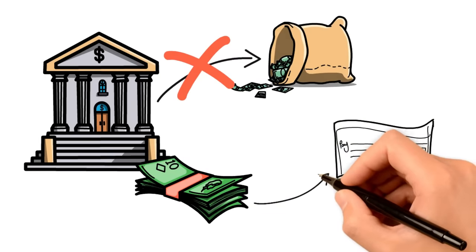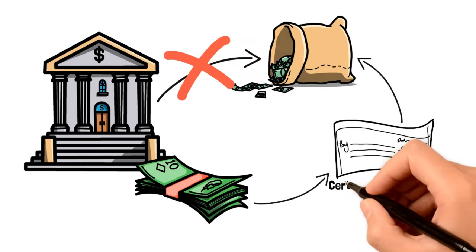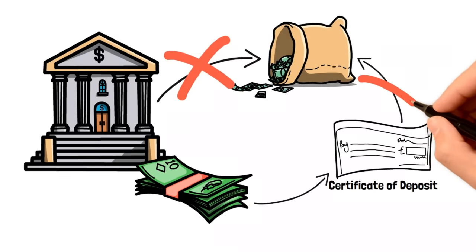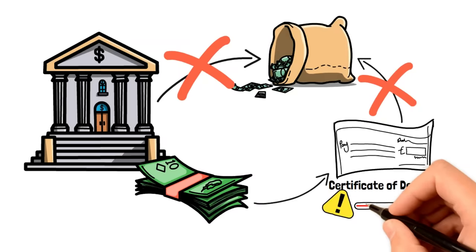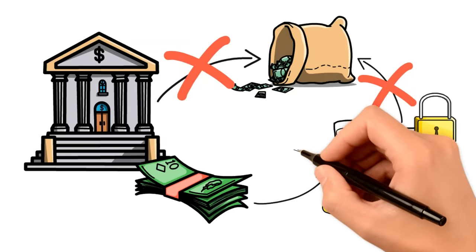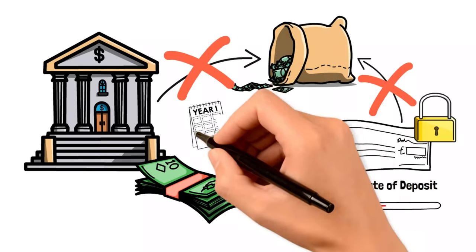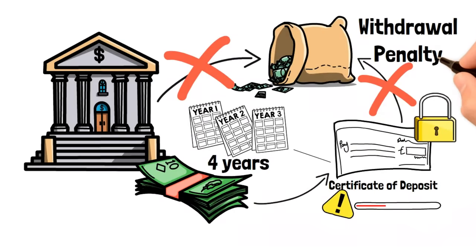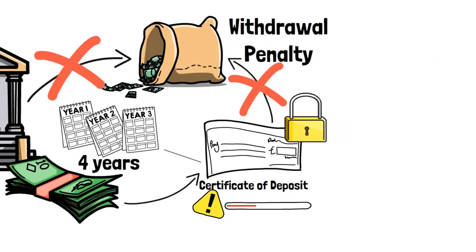A CD is another low-risk kind of bank savings that most people would recommend to you. CD stands for Certificate of Deposit. In this case, you put your money in a bank account and the money is locked so you can't withdraw. For instance, a four-year CD would keep your money locked up for four years. If you insist on withdrawing before the set date, you'll be charged an early withdrawal penalty.